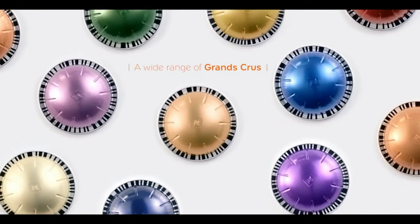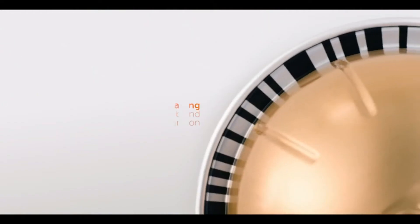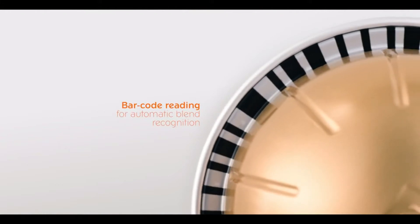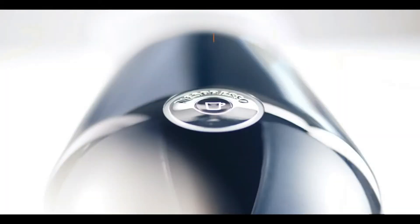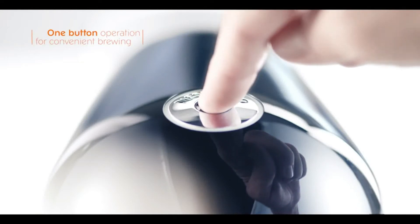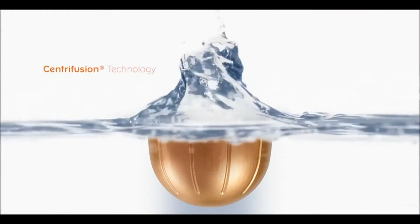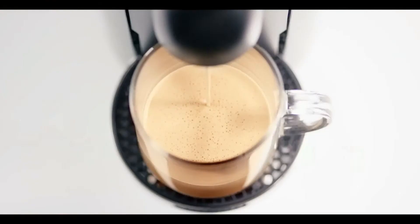Espresso is this machine's strong point, cups come out with a picture-perfect topping of crema, the frothy head that's the hallmark of a true espresso. We can thank the Virtuo Plus's centrifusion technology for that, with multiple holes punched into the pod and a rapid spinning process that produces a creamier quality coffee.